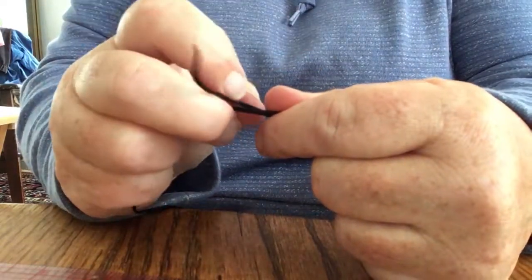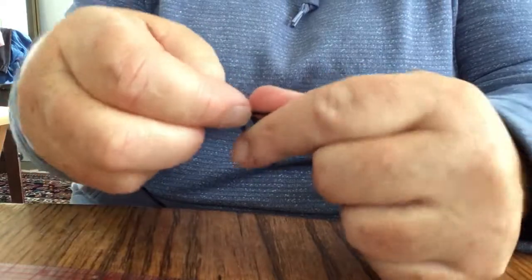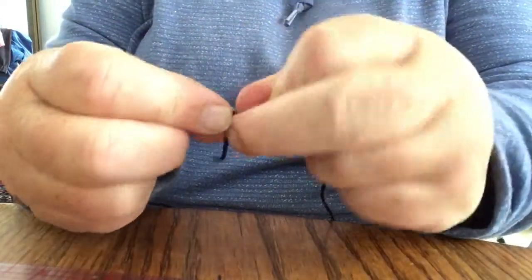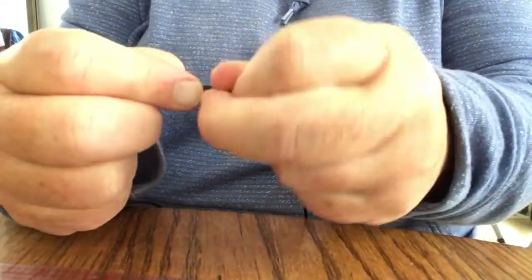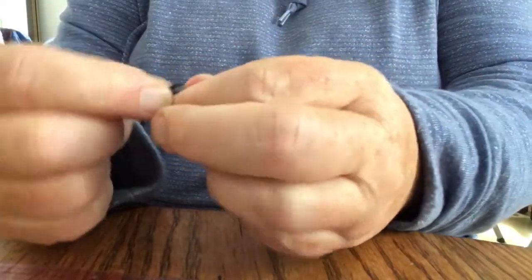Move in the direction of the end of the cord—once, twice, three times, four times. Tuck the end of the tail through that loop.